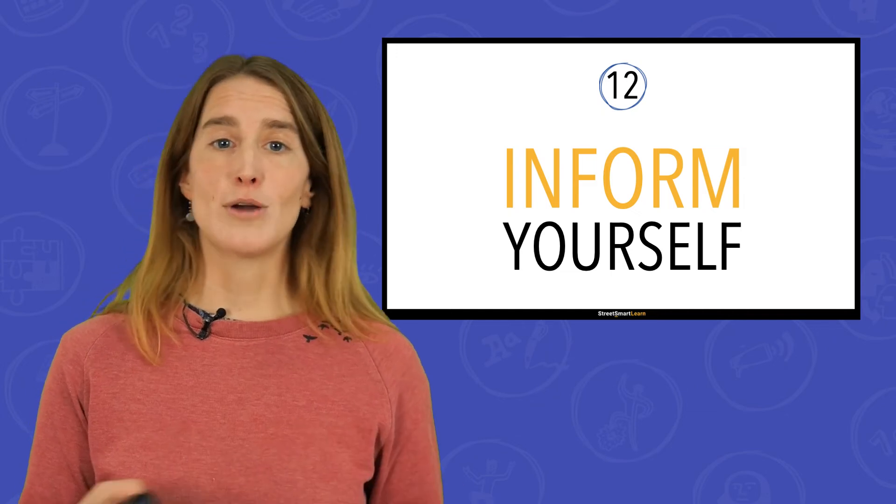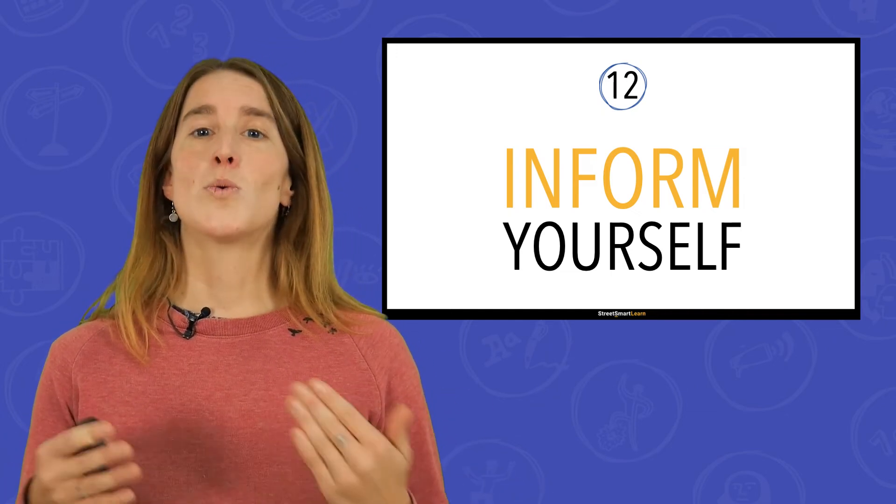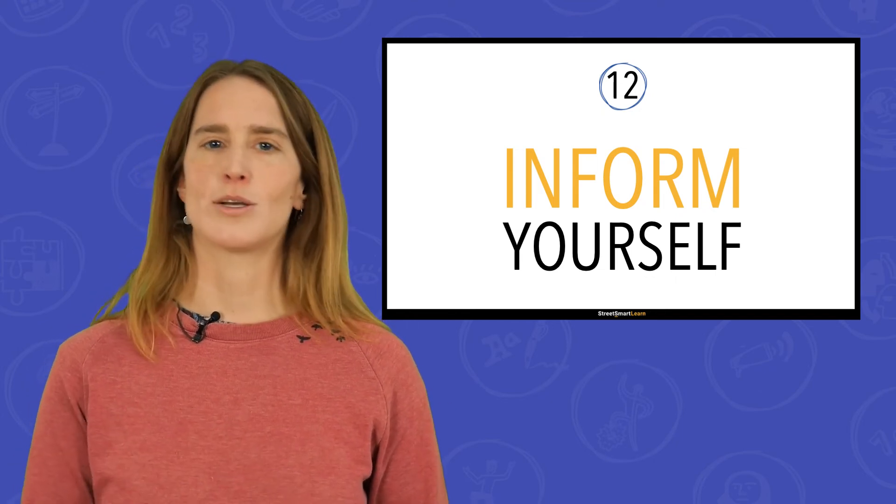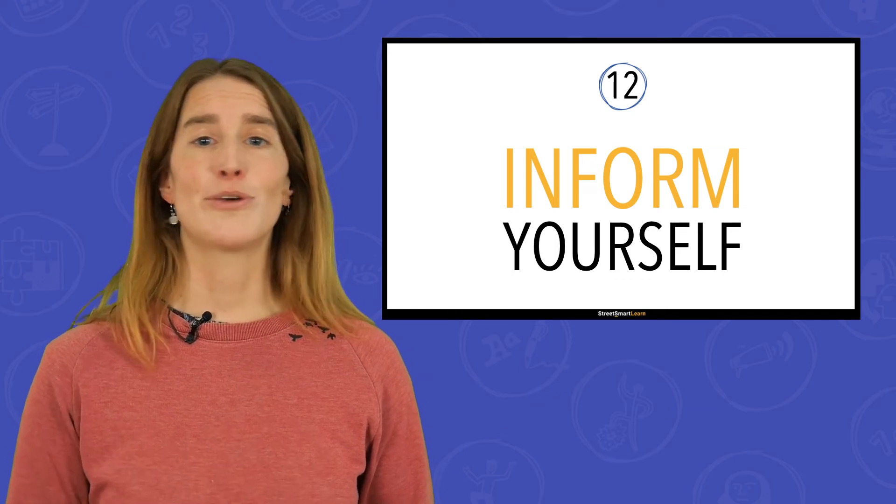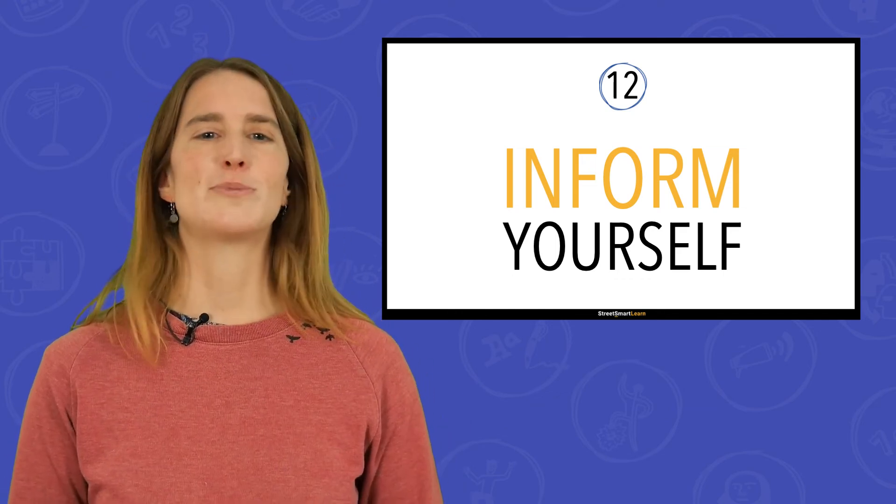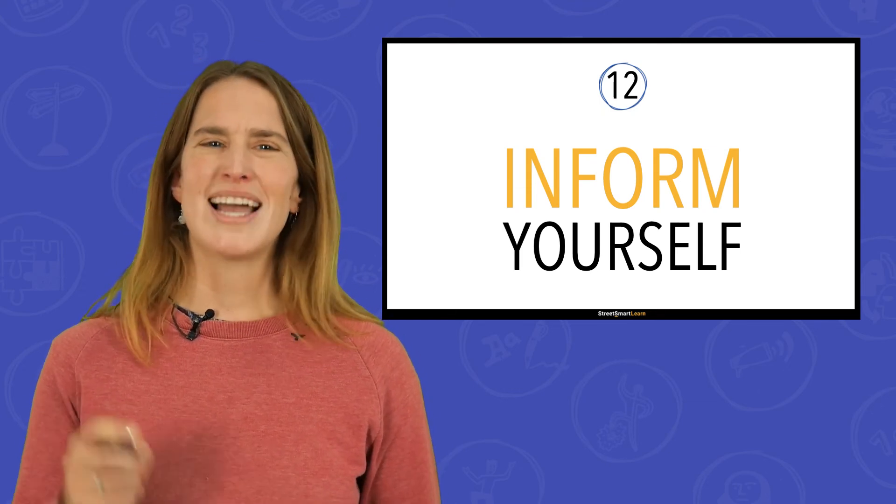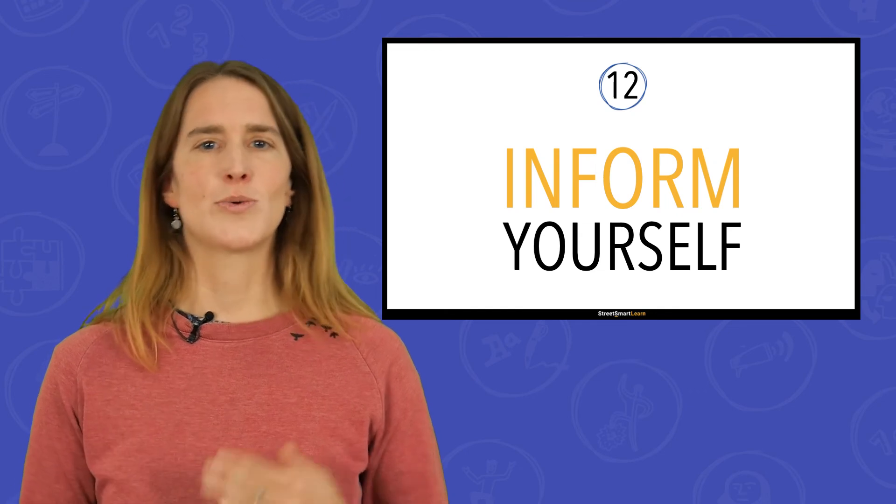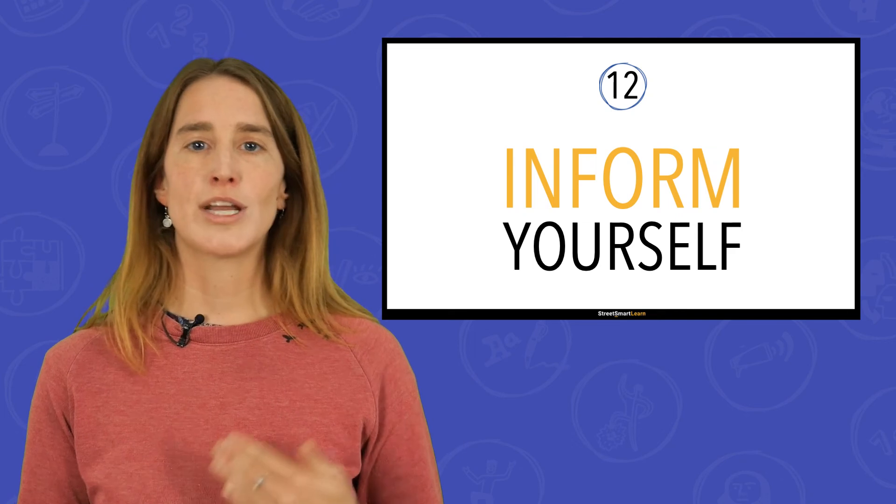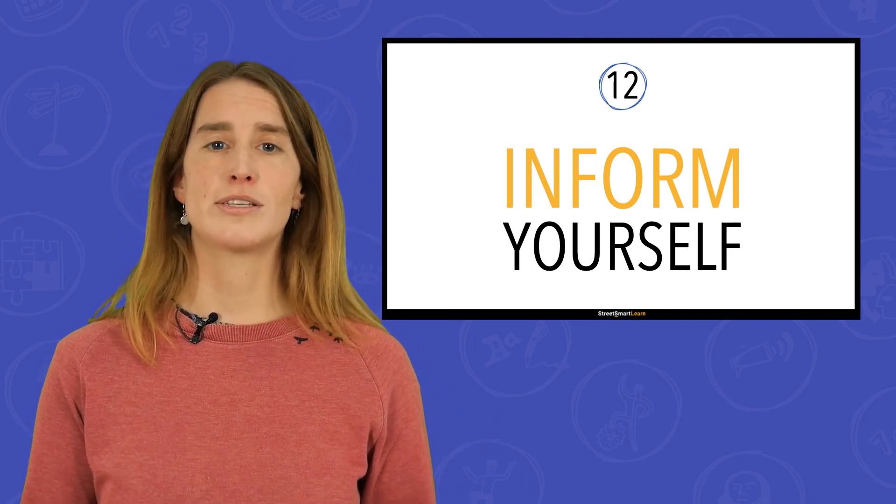Whenever you're talking about the body and boundaries or any other topic related to sex and sexuality, discuss where children can find accurate information on the topic and who they can turn to with problems and questions. Make sure to check out our comprehensive sexuality education resource database right here on Street SmartLearn for inspiration. Don't just inform children about these resources, but encourage them to actively think about which strategies or resources they would use in different situations as well. Let them act out how they would react to sexually transgressive behavior, for example, or let them discuss what they would do if they crossed someone else's boundaries themselves.